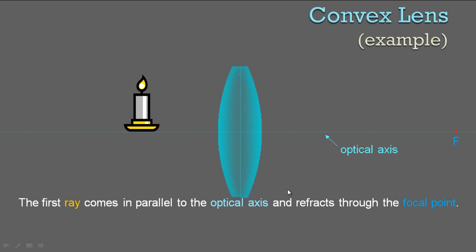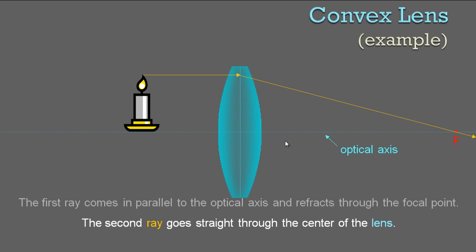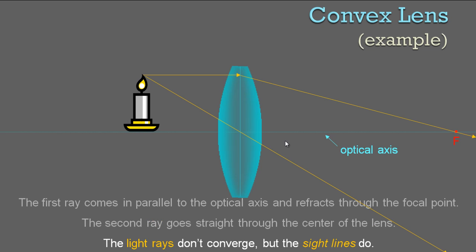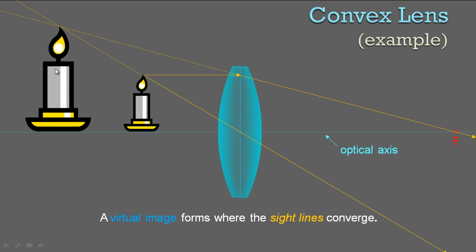Here's an example with a candle. We can ignore the thickness of the lens and just draw a center line — that's where the light rays start to converge. The first ray comes in parallel to the optical axis and refracts to the focal point. The second ray goes straight through the center of the lens. The light rays don't converge, but the sight lines do. Extend both lines back until they cross — we get a large virtual image on the same side of the lens as the object.